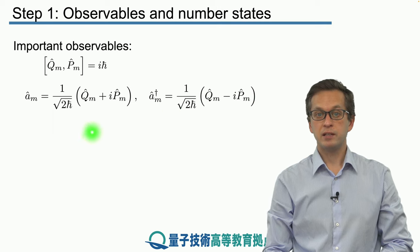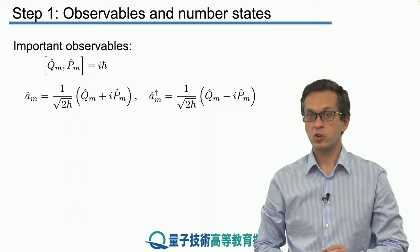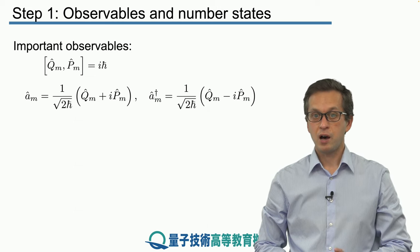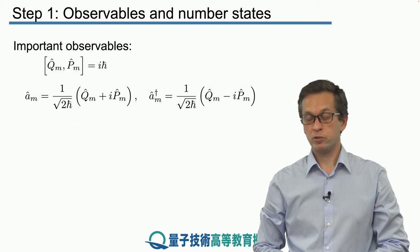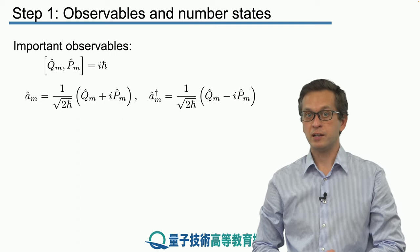A† and A are not Hermitian, meaning they do not represent observable quantities. However, all the observables we're going to use in this lesson and following lessons will be written in terms of A† and A.